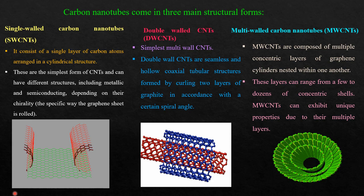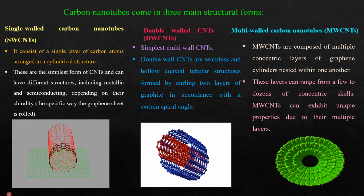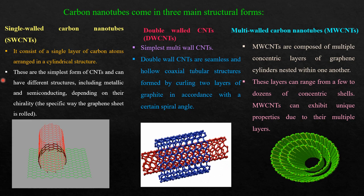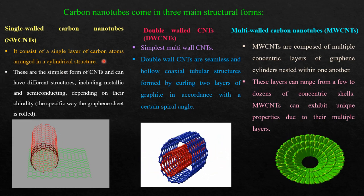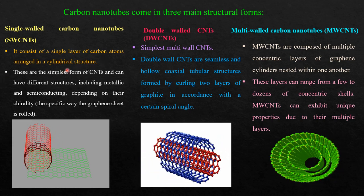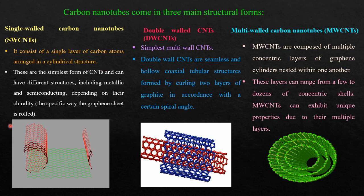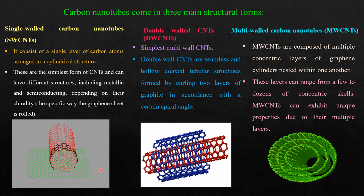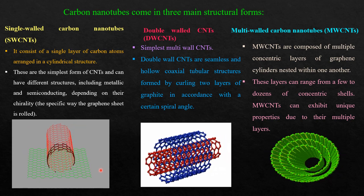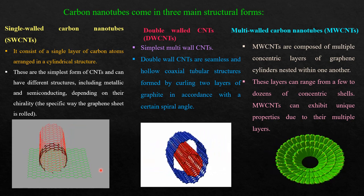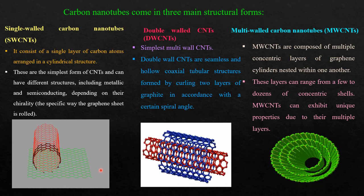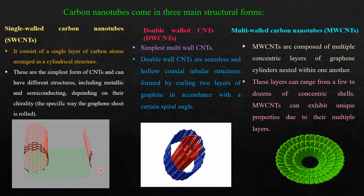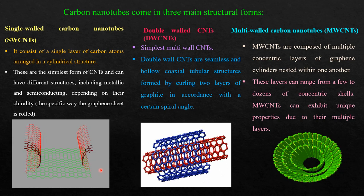A single graphene sheet is rolled up in a cylindrical tube in the form of a single layer and it consists of a single layer of carbon atoms arranged in a cylindrical structure. Single-walled carbon nanotubes are the simplest form of carbon nanotubes and can have different structures including metallic and semiconducting, depending on their chirality — which means the specific way the graphene sheet is rolled.